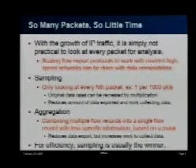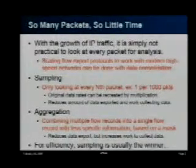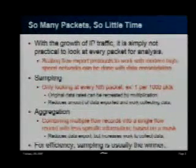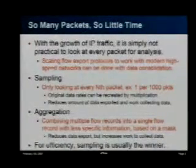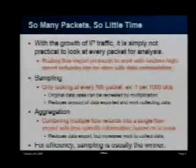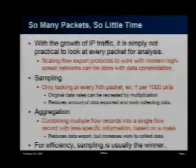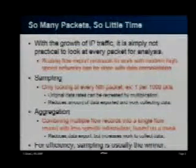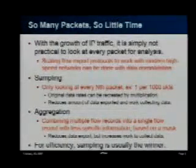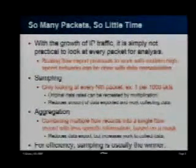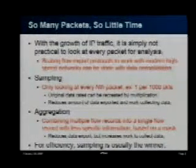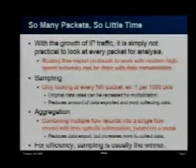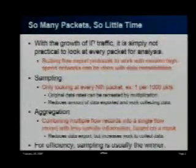The limitations you face when sampling data come down to how much data you're going to sample. With traffic rates growing as they are, it's significantly difficult to capture all packets. There are two methods to reduce the amount of data you need to monitor. The first is sampling — looking at one out of every N packets, multiplying by N, and hoping for a statistically correct average. The second is aggregation — collecting all the data but consolidating it on the device before exporting.